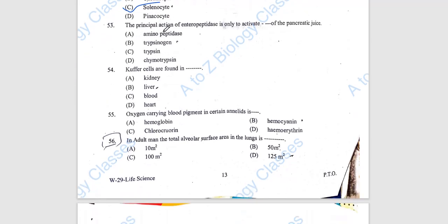Question 53: The principal action of enteropeptidase is only to activate trypsinogen of the pancreatic juice. Enteropeptidase activates trypsinogen to trypsin. Trypsin then activates chymotrypsinogen to chymotrypsin. The answer is B.